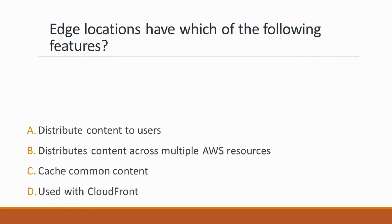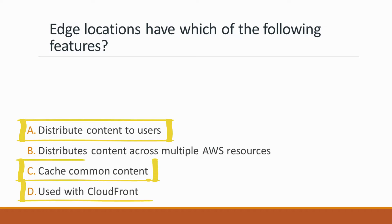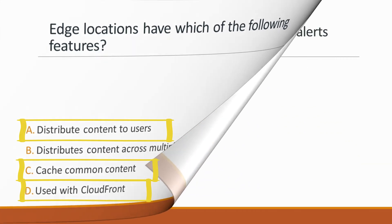Next question: Edge locations have which of the following features? Options: A. Distribute content to users, B. Distributes content across multiple AWS resources, C. Cache common content, D. Used with CloudFront. Correct answers are options A, C, and D, because edge locations are used along with CloudFront, are used to cache objects, and are used to deliver content quickly to your users.